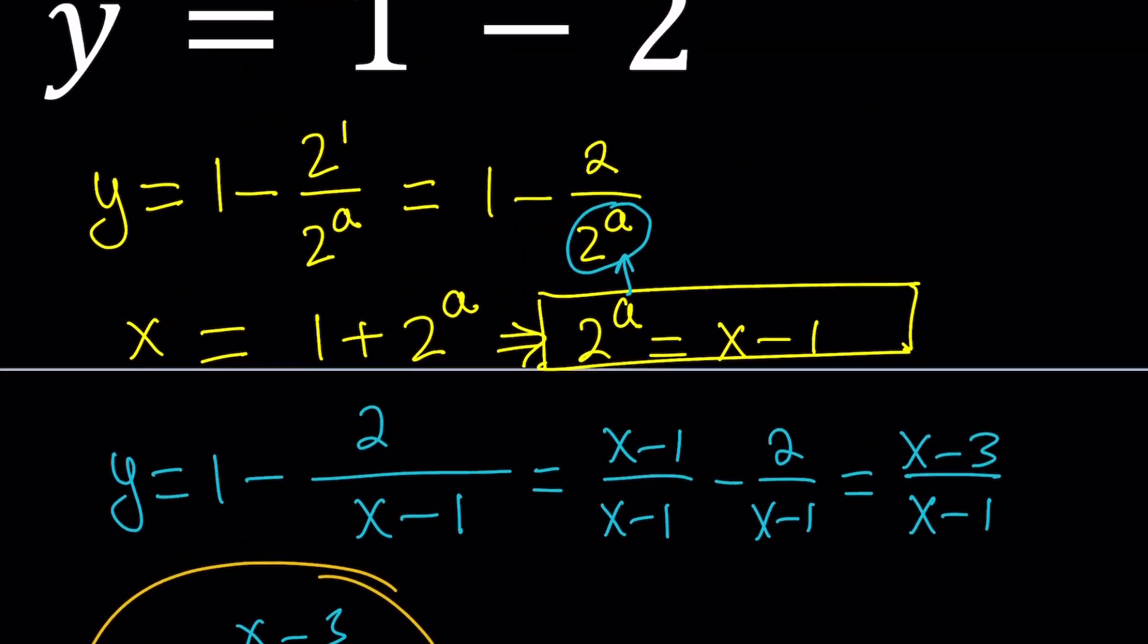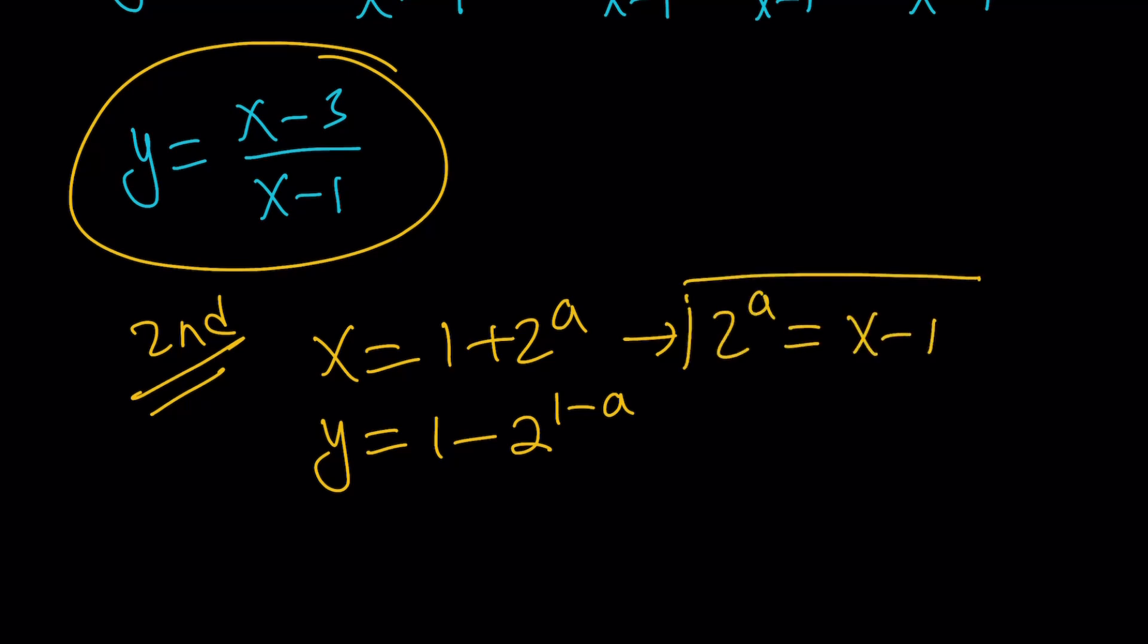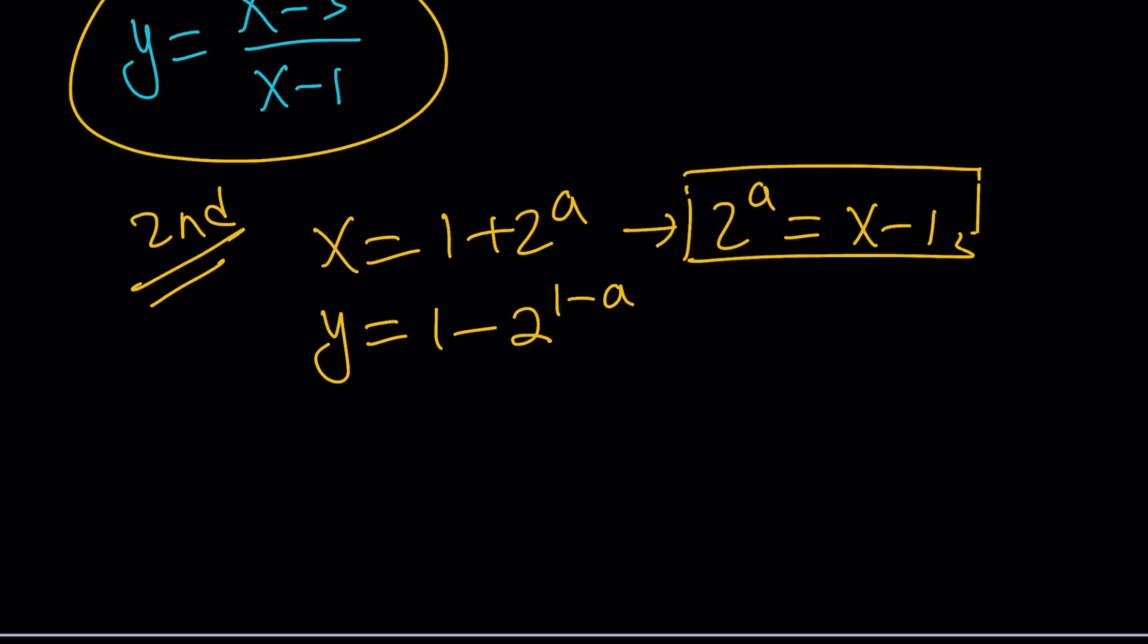Another method would be the following. Let's call this second method. x equals 1 plus 2 to the a, and y equals 1 minus 2 to the power of 1 minus a. This is a simple example, but I think for the theory, for the general idea, these things are good to know. So from the first equation, I was able to solve for 2 to the power of a. So this gave me 2 to the power of a equals x minus 1. Let's keep it at that now. Let's do the same thing here.